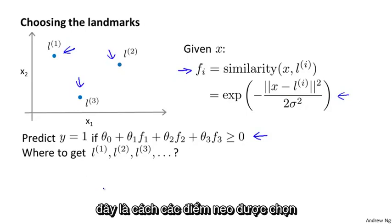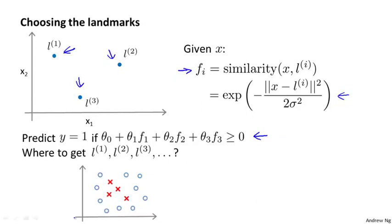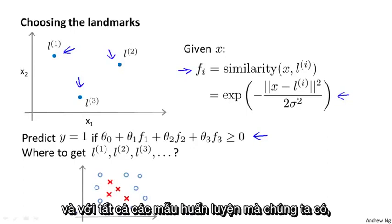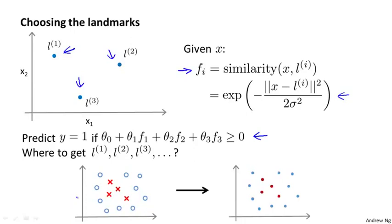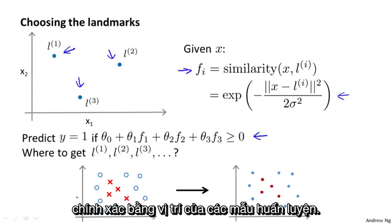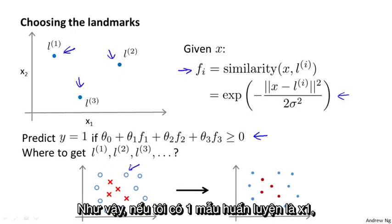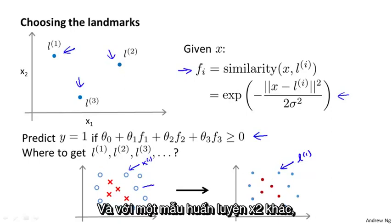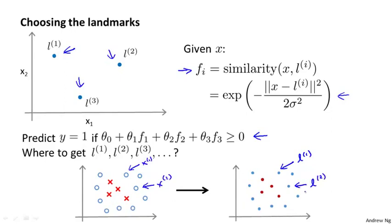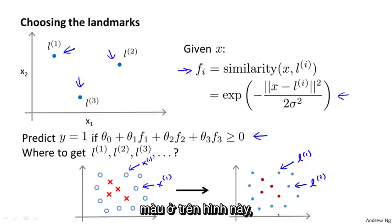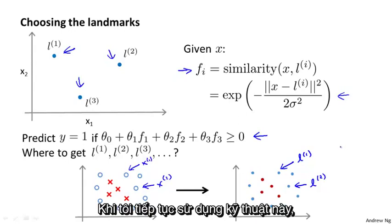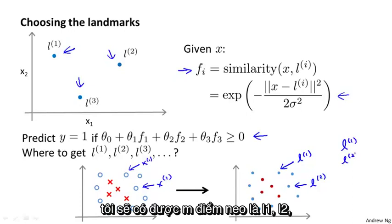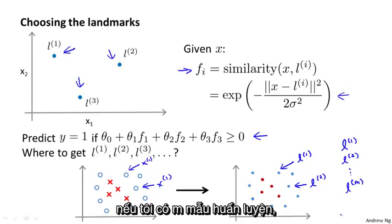So in practice, this is how the landmarks are chosen: given the machine learning problem, we have some dataset of positive and negative examples. The idea is that we're going to take the training examples, and for every training example we have, we're going to put landmarks at exactly the same locations as the training examples. So if I have one training example x1, I'm going to choose my first landmark to be at exactly the same location as my first training example. Similarly, x2 maps to the second landmark, and so on. Using this method, I end up with m landmarks — l1, l2, down to lm — one landmark per training example.